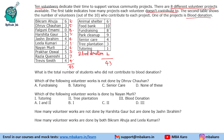The first question is: what is the total number of students who did not contribute to blood donation? There are 10 students and 2 contributed to blood donation, so 8 did not contribute to blood donation.